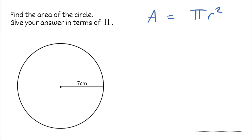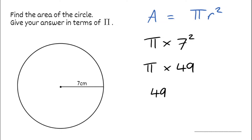So for this example, our radius is 7 centimetres. So we'd simply substitute that in for r. So we've got pi multiplied by 7 squared. Well, we know that 7 squared is 49, so this is the same as pi multiplied by 49, which we can then just simply write as 49 pi. So we've got to make sure we're using the correct units — if the radius was 7 centimetres, the area is going to be in centimetres squared. So the final answer is 49 pi centimetres squared.